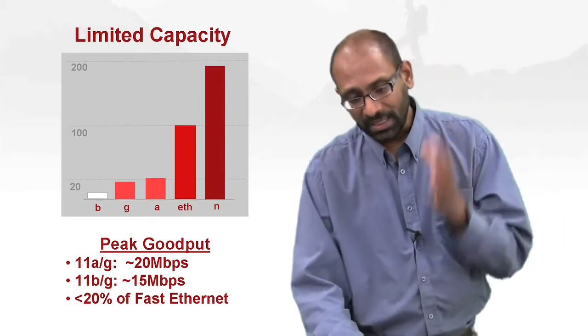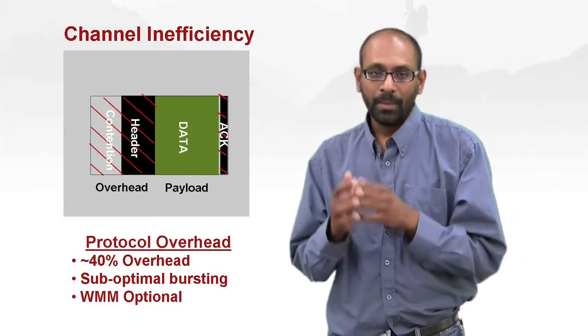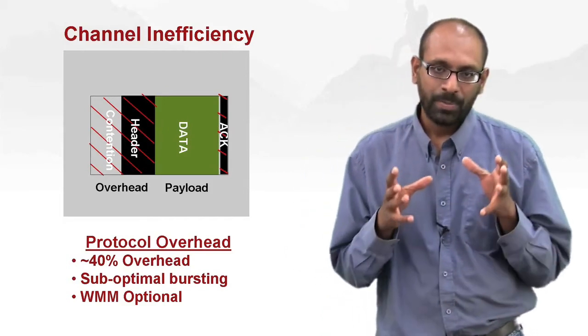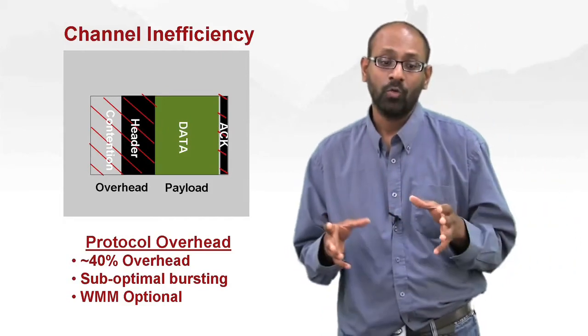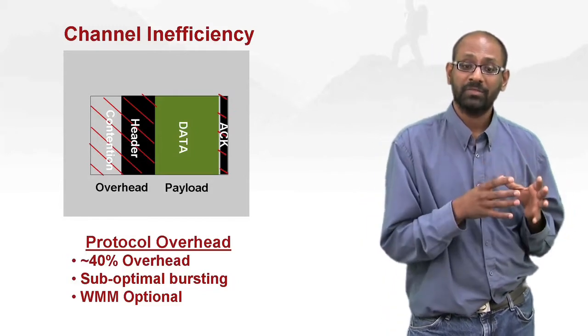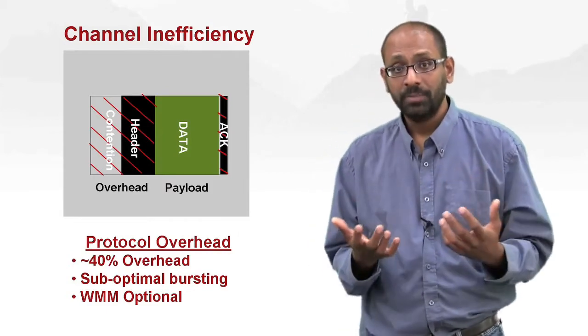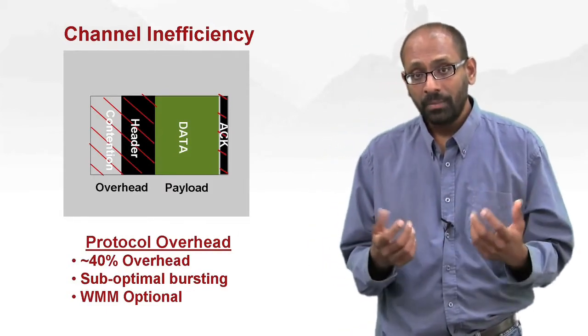So going to the second key point of 802.11abg, or the limitation of 802.11abg, it's not just that the capacity was limited, it's that the way the channel was utilized itself was inherently inefficient. The amount of time that was spent in contention and in header overhead was significant. And again, remember from our past videos that 802.11abg is fundamentally a hub standard.